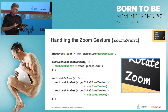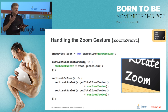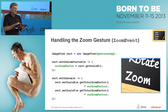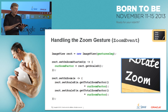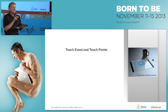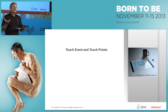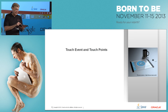The zoom gesture is when you separate or bring your fingers together. On zoom started, get the current scale X value (the current zoom factor). On zoom, multiply the total zoom factor since zoom started by the original zoom factor at start time. That keeps the zoom in sync with the gesture. This same example supports zooming, rotating, and scrolling together.